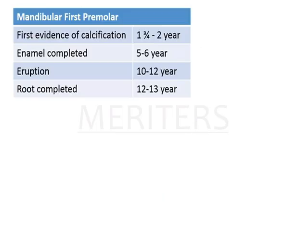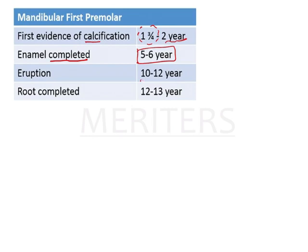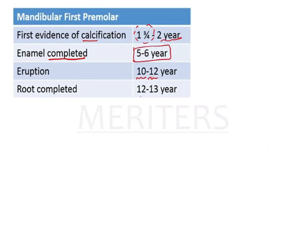Now we need to find the various chronological ages of calcification. The first evidence of calcification is seen around 1.75 to 2 years of age. The enamel is completed by 5 to 6 years of age. Eruption takes place around 10 to 12 years of age for the lower premolar. The eruption age of the upper first premolar is 11 to 12 years of age.